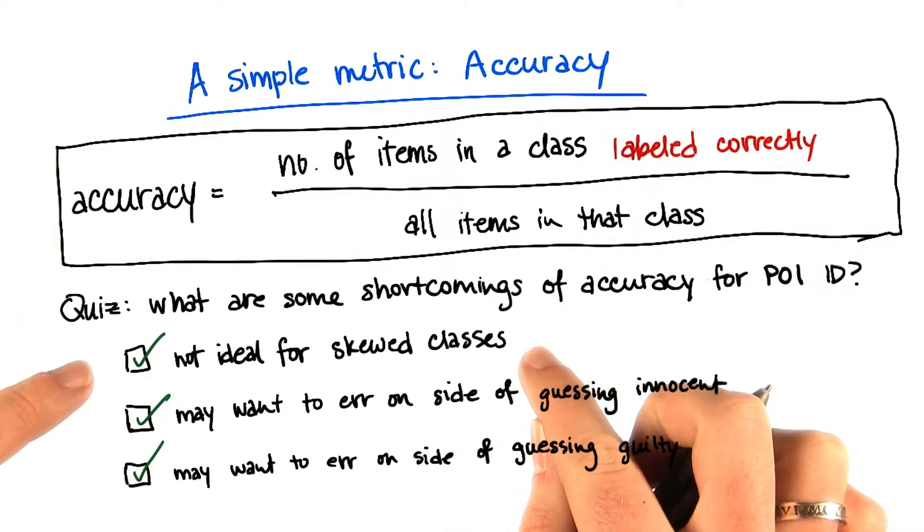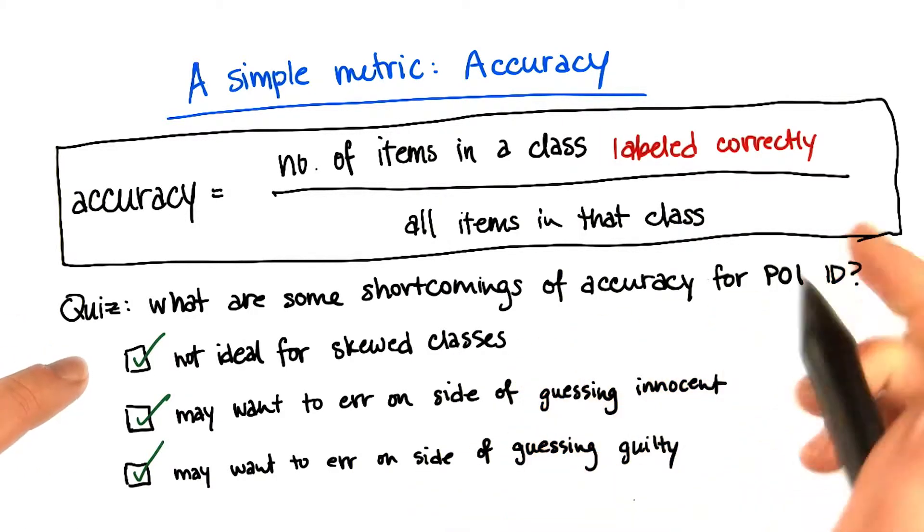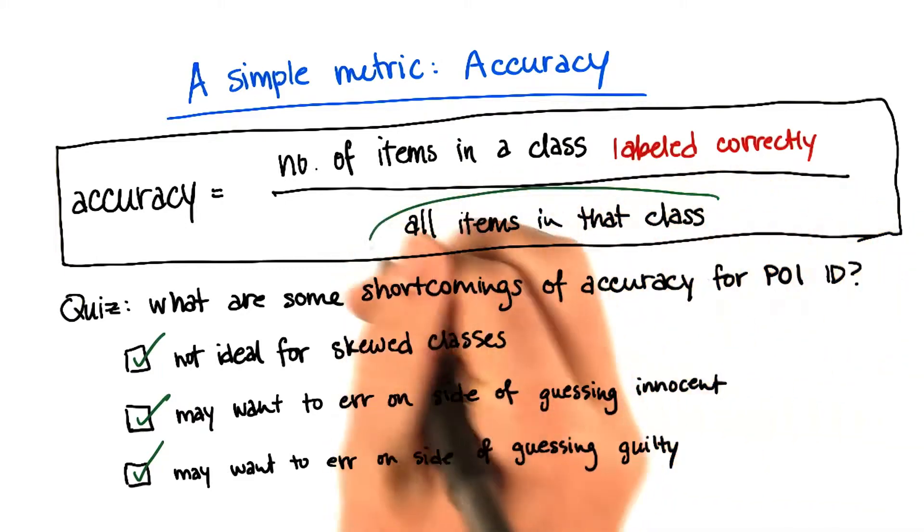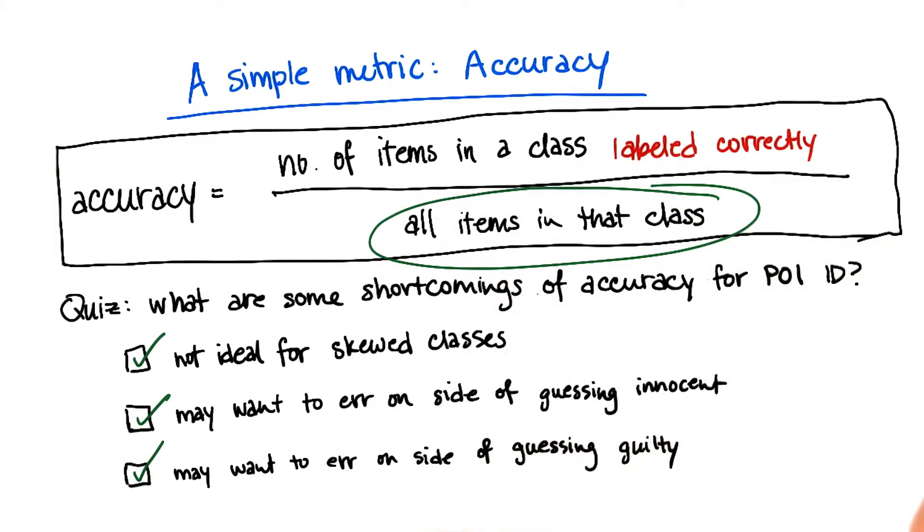Accuracy can give you a problem when you have skewed classes. Because the denominator of this formula, all the items in this class, ends up being a very small number. Which means that the accuracy you compute as a result is something you might not be as trustworthy of as if you have lots of examples of instances of that class.